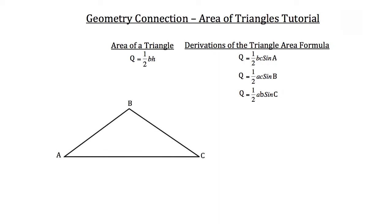In this case we're going to be working with triangle ABC. Now in order to calculate the area of a triangle, one piece of information that you need is a height, so I'm going to draw on the height here and also label our side lengths a, B, and C.